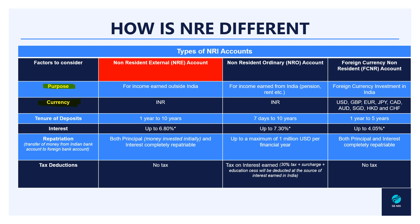Coming to the next factor: currency. Both NRE and NRO accounts are maintained in INR, so you withdraw funds in INR. Since FCNR is a foreign currency investment tool in India, the investments and maintenance of the account are in foreign currencies - it can be US dollar, pounds, euro, or whatever you like; all major globally tradable currencies are accepted. For tenure of deposits: NRE accounts have a minimum 1 year to maximum 10 years; NRO accounts have a minimum of 7 days to maximum 10 years; and FCNR has a tenure ranging from 1 year to 5 years.